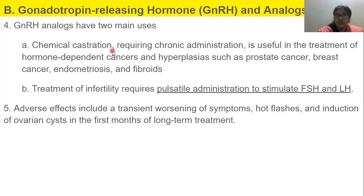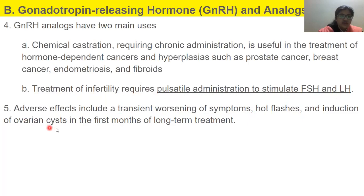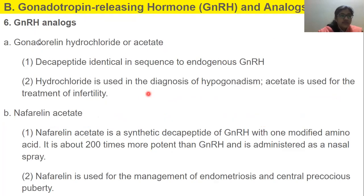Endometriosis involves abnormal development of layers on the uterus. Treatment of infertility requires pulsatile administration to stimulate FSH and LH. Adverse effects include a transient worsening of symptoms, hot flashes, and induction of ovarian cysts in the first month of long-term use.